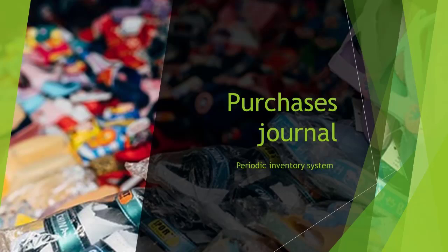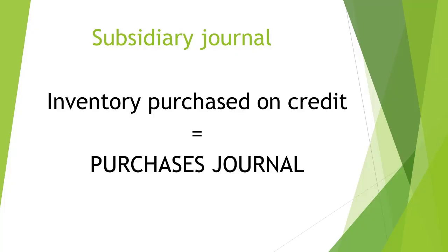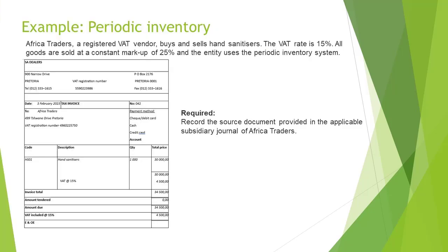Good day. In this video, we will have a discussion about the Purchases Journal when a business makes use of the periodic inventory system. When a business buys inventory on credit, those transactions will be recorded in the Purchases Journal. Let's look at an example.